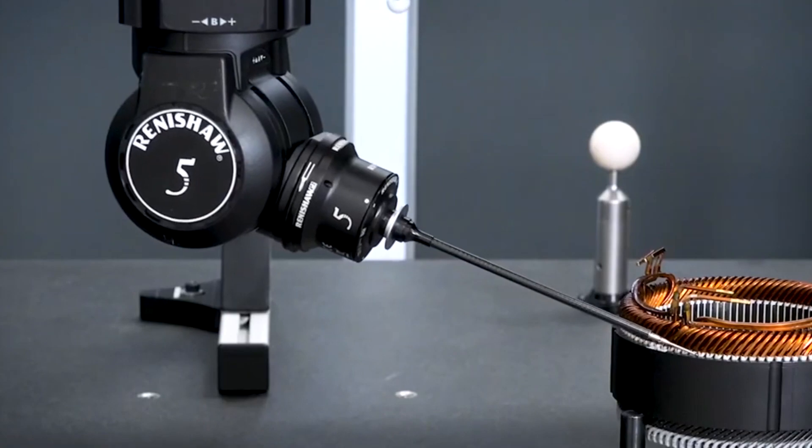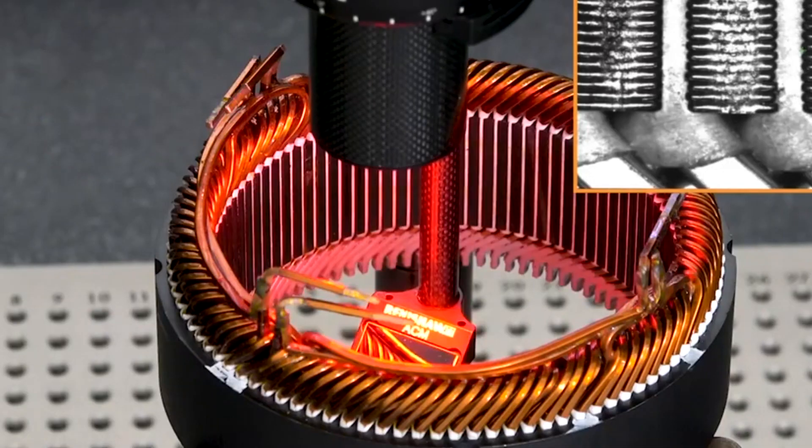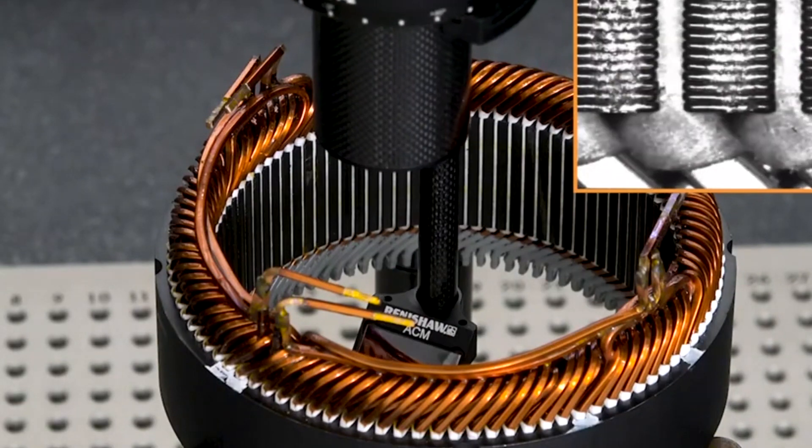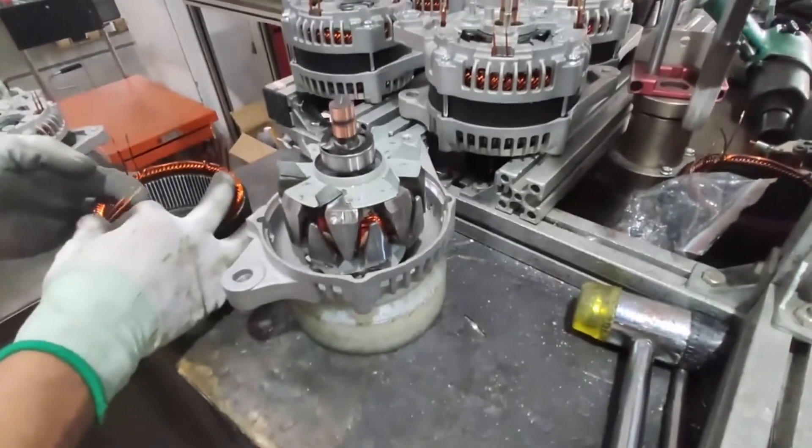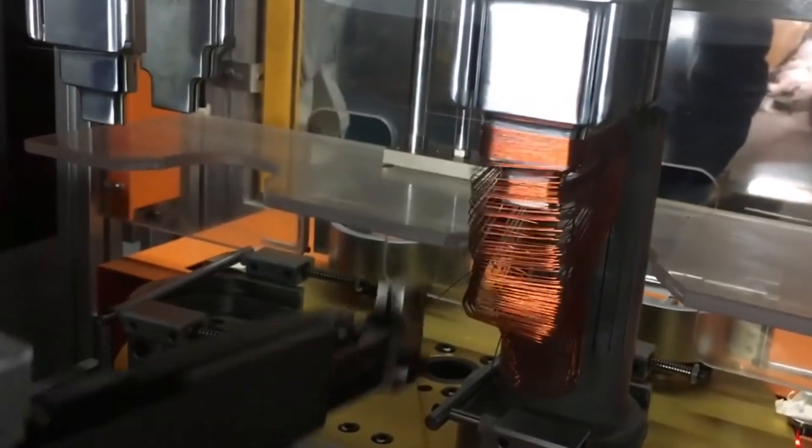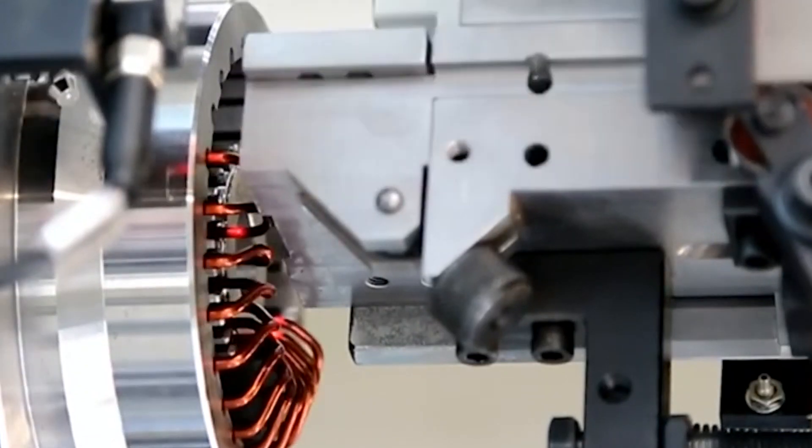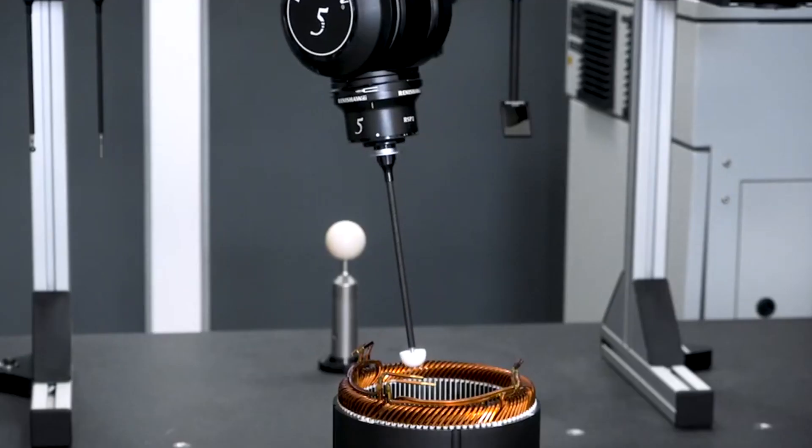Overall, the increase in range due to hairpin technology is a significant advantage that can make electric vehicles more appealing to a broader range of consumers. The hairpin technology also presents a simpler and more efficient solution for assembling motors compared to traditional roundwire technology. This is due to the symmetrical and solid shape of hairpins, which makes them easier to wind and eliminates the need for stitch cords.